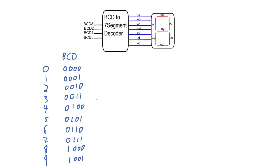Oftentimes you'll want to take a BCD number and display it on a seven segment display. To do that we need a way of converting the BCD value into the appropriate signals to turn on the LEDs of the display. A seven segment display has seven different segments, each controlled by a single signal. For example, signal OA turns the LED on if OA is 1 and off if OA is 0 — that's the active high configuration, which is what we'll be using. Each segment is turned on when its corresponding signal is high.